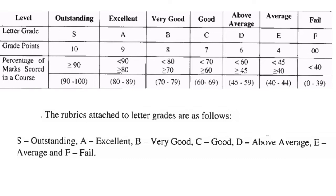The percentage of marks scored in a course determines the grade letter. A score of 90–100 gives grade S (10 points); 80–89 gives A; 70–79 gives B; 60–69 gives C; 45–59 gives D; 40–44 gives E; and 0–39 gives F. The minimum passing mark is 40 out of 100, so any score below 40 is a fail.